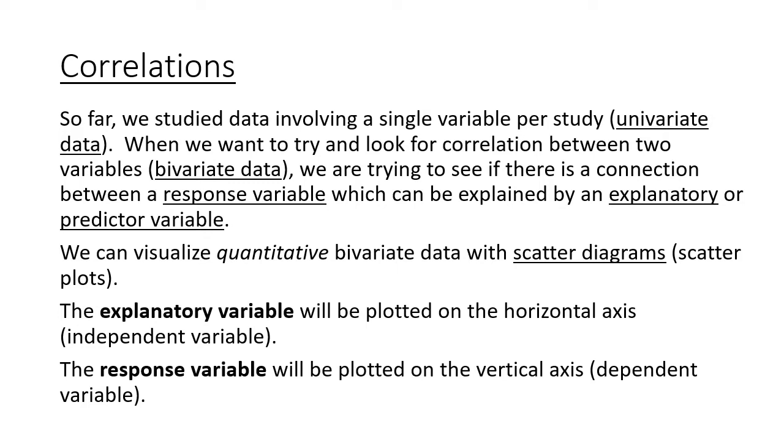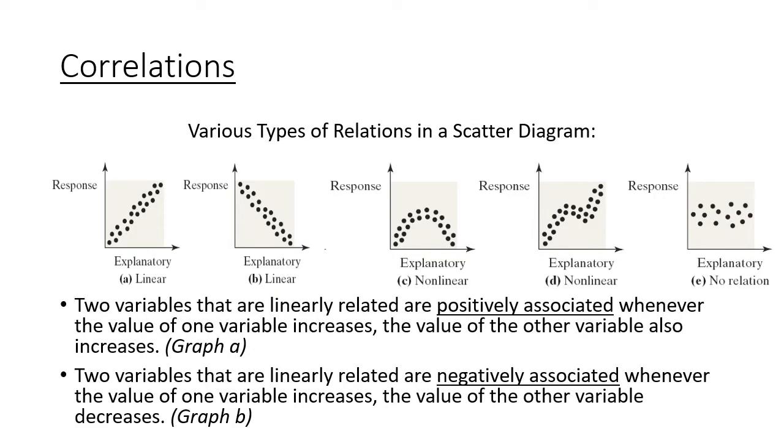The way we're going to do this visually is with scatter diagrams or scatter plots. When we do this, the explanatory variable is our horizontal axis—the explanatory is our independent variable, it's the one that we can typically control. The response variable is our dependent, which is on our vertical axis. We plot this data, and it's really just plotting two points and seeing if there's some sort of relationship.